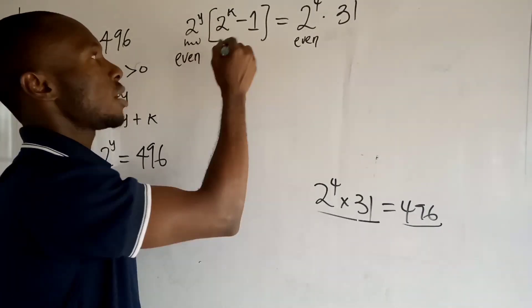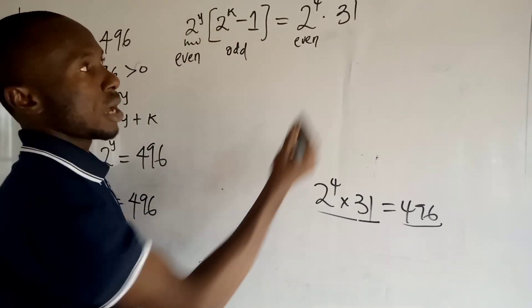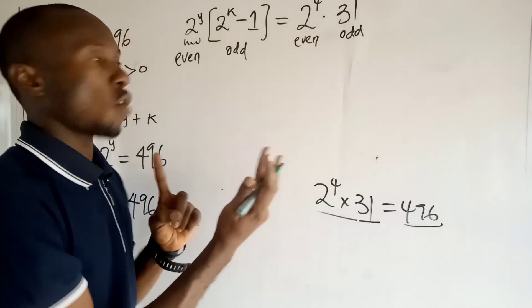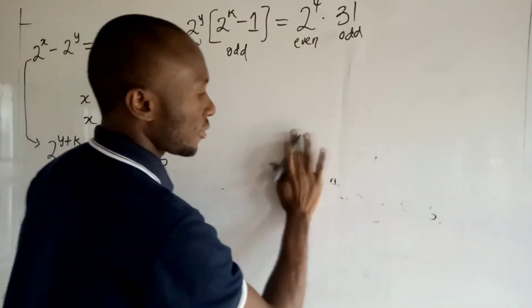And you can see that whatever be the value of k, this guy may be even, but because of the subtraction here we always have an odd number. And of course this guy too is odd, so I'm going to equate the even terms and the odd terms.